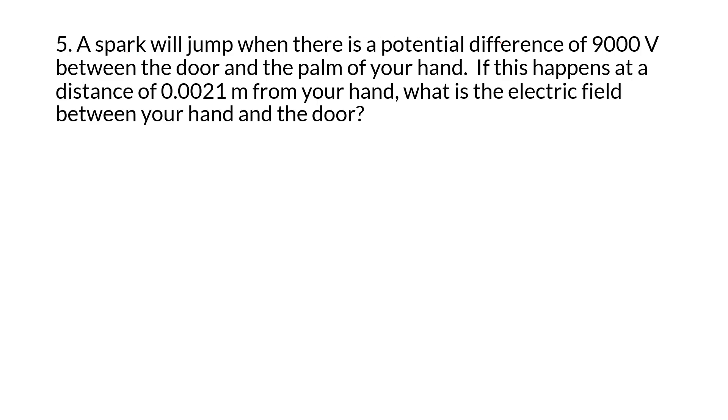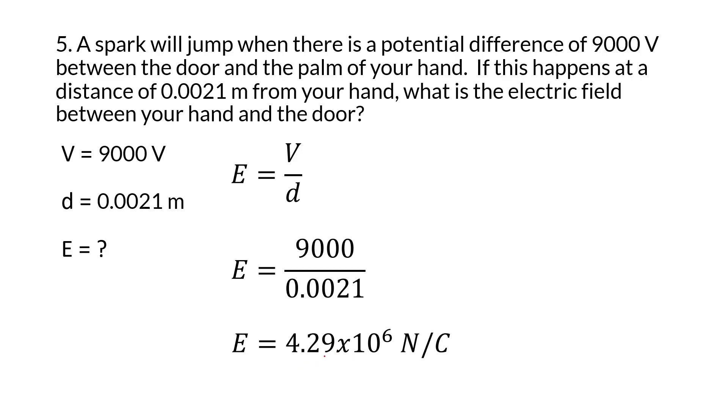This next one, we have a spark jumping from when there was a potential difference of 9,000 volts. It tells you a distance of 0.0021 meters and asks you about the electrical field. That leads you to this equation. When you plug in your values, you get 4.29 times 10 to the 6 Newton Coulombs.